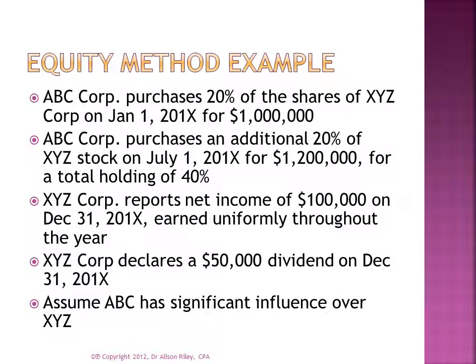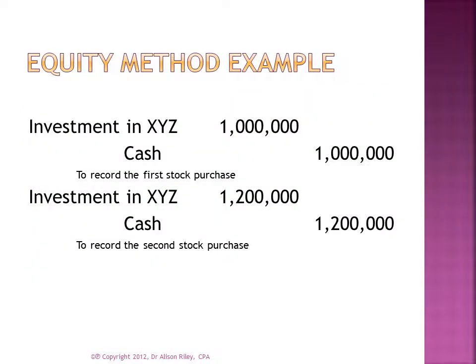Suppose ABC Corp. purchases 20% of the shares of XYZ Corp. on January 1st, 20X, for $1 million. Suppose also that ABC Corp. purchases an additional 20% of XYZ stock on July 1st, 20X, for $1.2 million, for a total holding of 40%. Assume XYZ Corp. reports net income of $100,000 on December 31st, 20X, earned uniformly throughout the year, and declares a $50,000 dividend on December 31st, 20X. This slide shows the two stock purchases, both recorded at cost, debited to the same asset account.